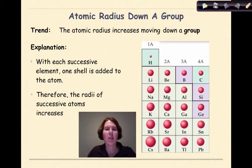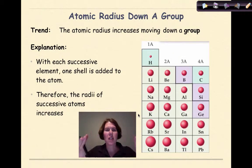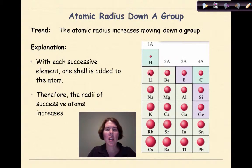Now let's look at the trend of atomic radius down a group. The atomic radius is going to increase moving down a group — the atoms get larger as shown in the visual. With each successive element, one shell is added to the atom, so the atoms get larger and larger. Therefore, the radii of successive atoms increases. For example, comparing lithium to cesium going down the group, the atomic radius for cesium is going to be much larger than that of lithium.